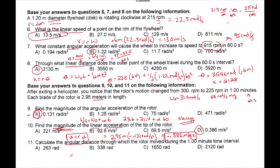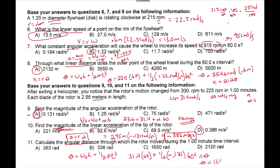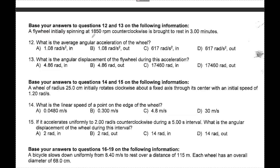For angular distance, theta equals omega naught t plus one-half alpha t squared: 31.4 times 60 plus one-half times minus 0.131 times 60 squared. Theta comes to 1,650 rads. Converting to rads per minute gives 193.7 rads per second. This is counterclockwise, and it's brought to rest in three minutes, which is 180 seconds.